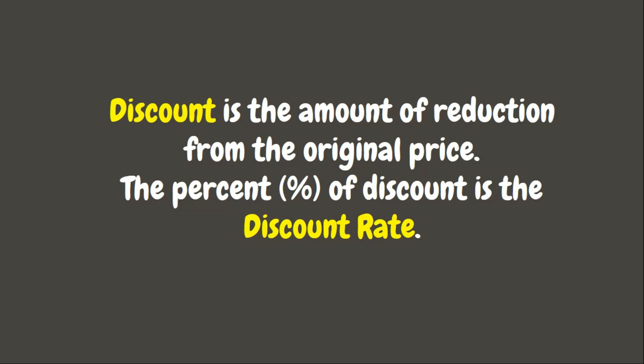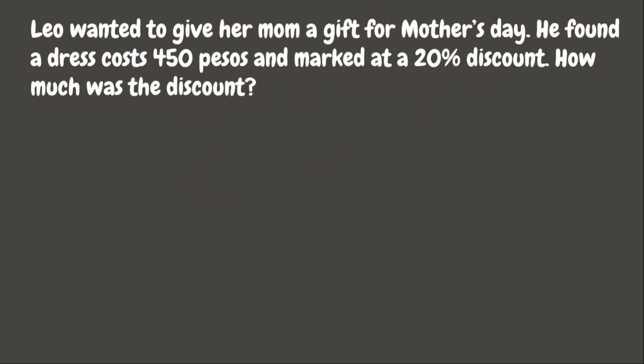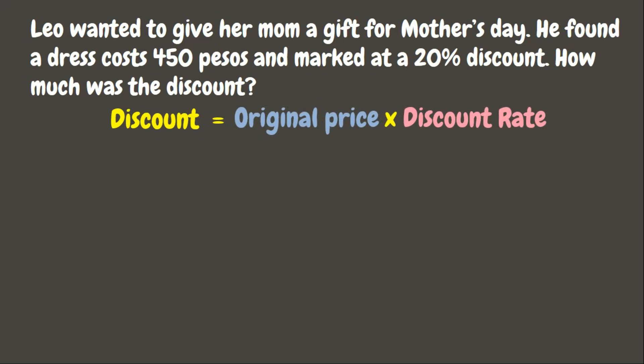Discount is the amount of reduction from the original price, while the percent of discount is the discount rate. Now let's try to solve the problem. To solve for the discount, we need to multiply the original price and the discount rate.